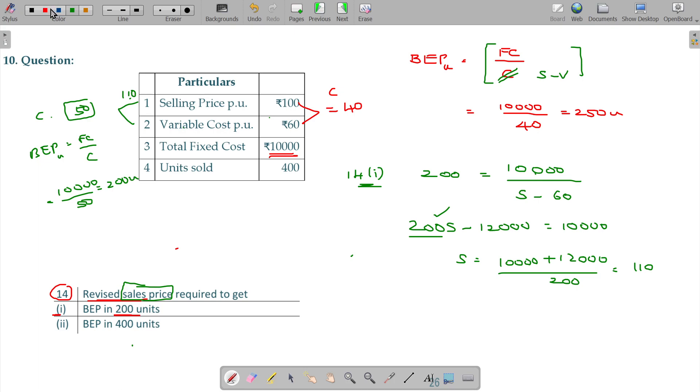Now if I want to reach BEP at 400 units, I can calculate. 400 equals 10,000 divided by (S minus 60), where we need to find S and the variable cost is 60.